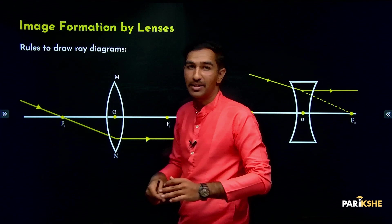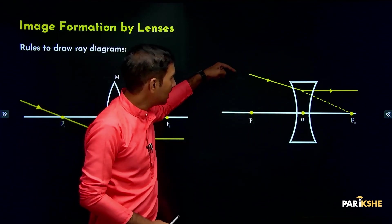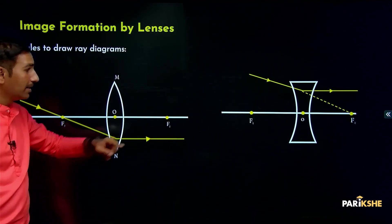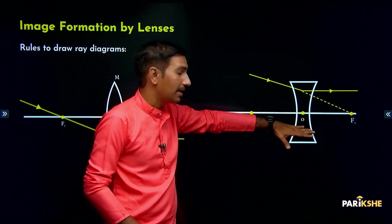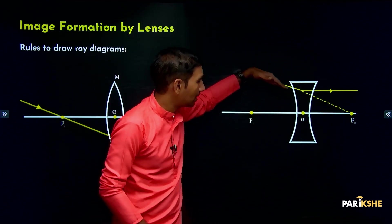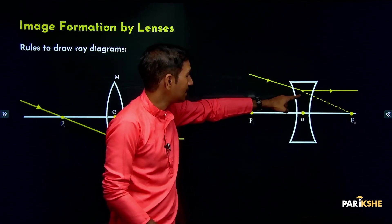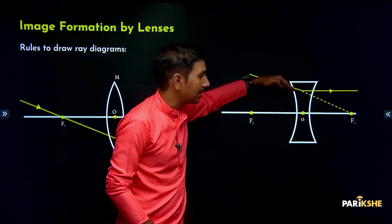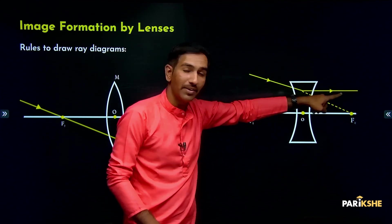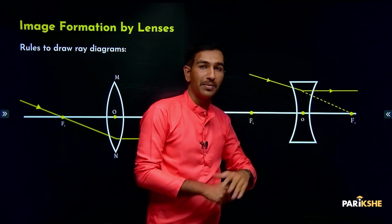The same thing is happening with a concave lens, but with a difference. The incident ray is directed towards the focus — it doesn't actually pass through it because the lens is in the way. But it is directed towards the focus. After refraction, the refracted ray will be parallel to the principal axis. Very similar rules, comparable to mirrors.